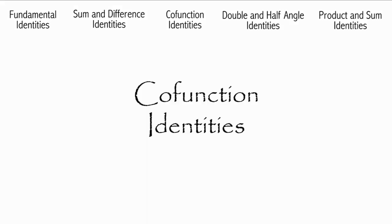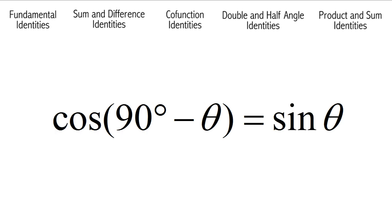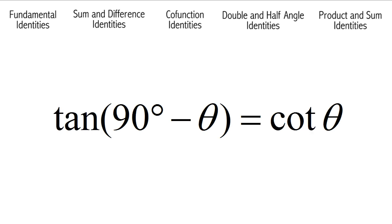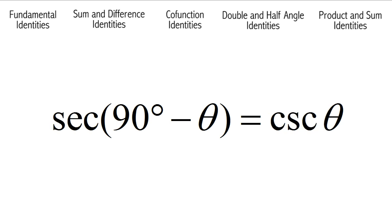Now we're going to do the co-function identities. Sine of 90 degrees minus theta is equal to cosine theta. Cosine of 90 degrees minus theta is equal to sine theta. Tangent of 90 degrees minus theta is equal to cotangent theta. Cotangent of 90 degrees minus theta is equal to tangent theta. Secant of 90 degrees minus theta is equal to cosecant theta. Cosecant of 90 degrees minus theta is equal to secant theta.